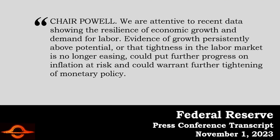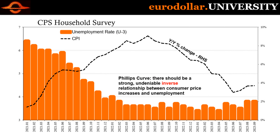What are his ideas of inflation? Powell continued: 'We are attentive to recent data showing the resilience of economic growth and demand for labor. Evidence of growth persistently above potential, or that tightness in the labor market is no longer easing, could put further progress on inflation at risk and could warrant further tightening of monetary policy.' So again, the Phillips curve — they're focusing on the labor market because they believe that's where inflation comes from, even though there's no correlation whatsoever in reality. But we have to factor even these non-economic mistakes when interpreting what the yield curve is doing.